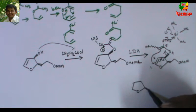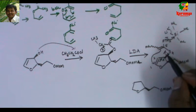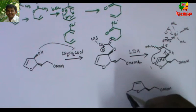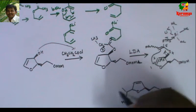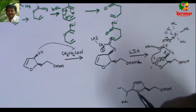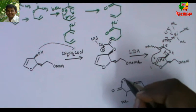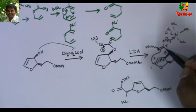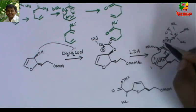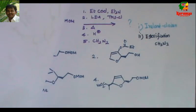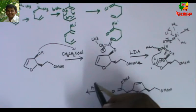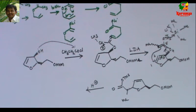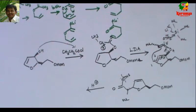We are not touching the MOM-protected portion, so I write it as such. This bond becomes a double bond and here we introduce a carboxylate group — that is COO-OTMS. After rearrangement, we get the COO-OTMS group. The next step is treatment with H+. H+ cleaves the O-TMS to give the free carboxylic acid.